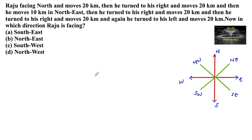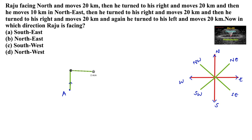Let us consider Raju's starting point here and mark it as A. He is facing towards the north direction and moves 20 km towards the north. Then he turns to his right — when facing north, turning right means he is now moving towards the east direction — and travels 20 km towards the east.